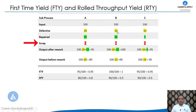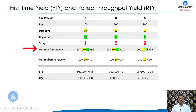From Process B, zero products were scrapped — all 10 defectives were repaired and made okay. From Process C, 5 products were scrapped. The fifth row shows output after rework. This is calculated as input minus defectives plus repaired units.